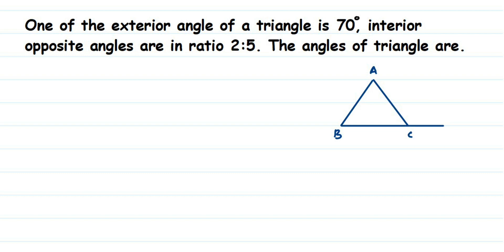Hi everyone, here is a question on triangle. The question is one of the exterior angle of a triangle is 70 degrees. Interior opposite angles are in the ratio 2 is to 5. The angles of triangle are.